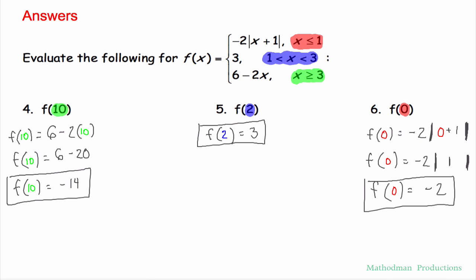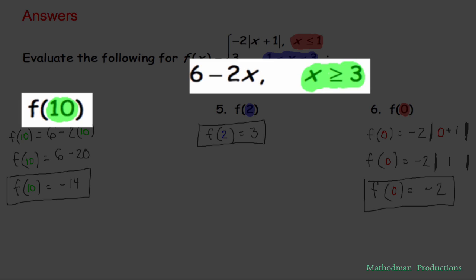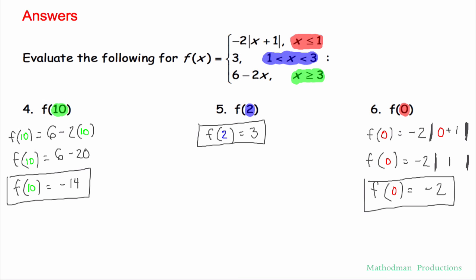For number 4, f of 10. Since that's more than 3, I'm going to use the function 6 minus 2x. Put that in and you get negative 14.